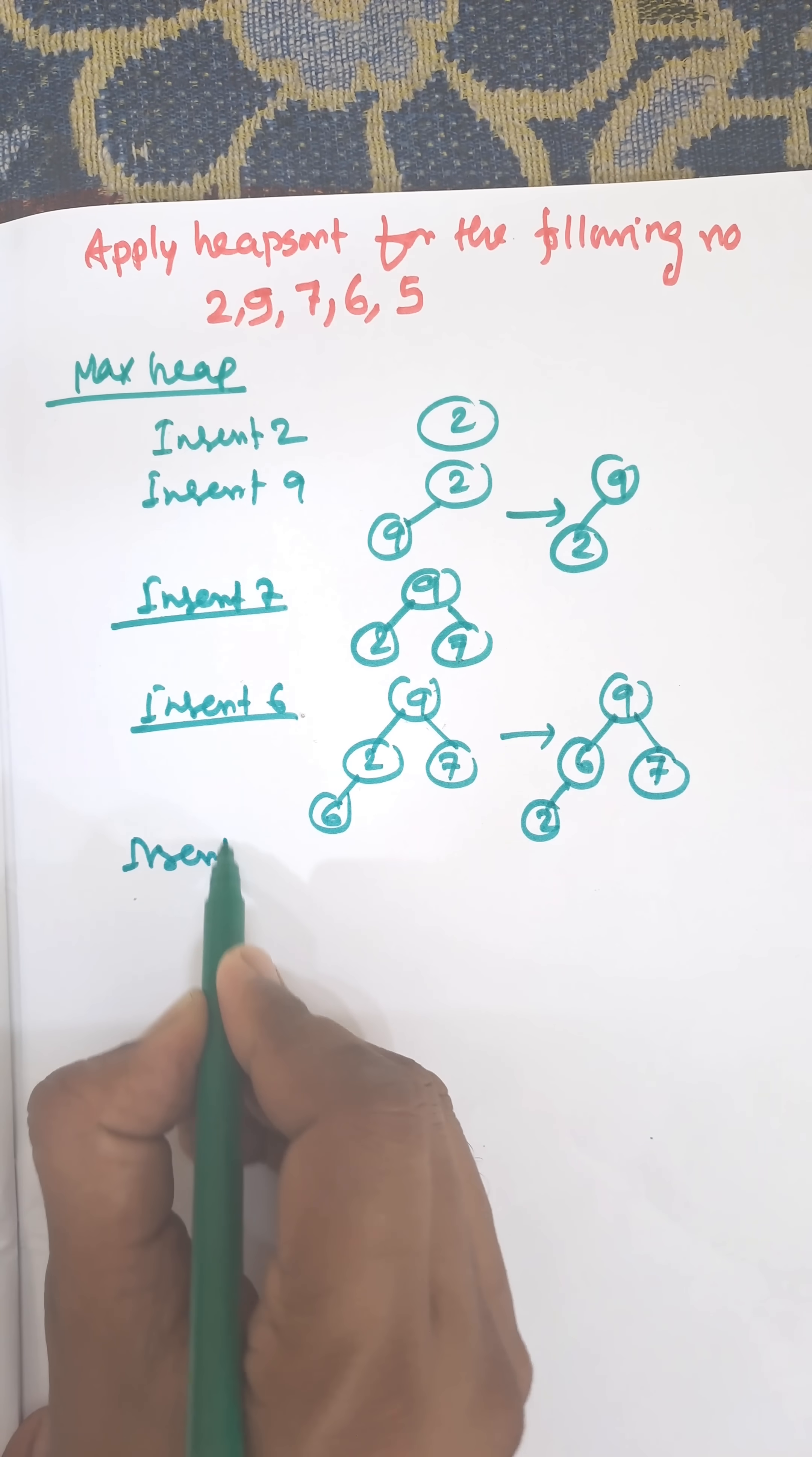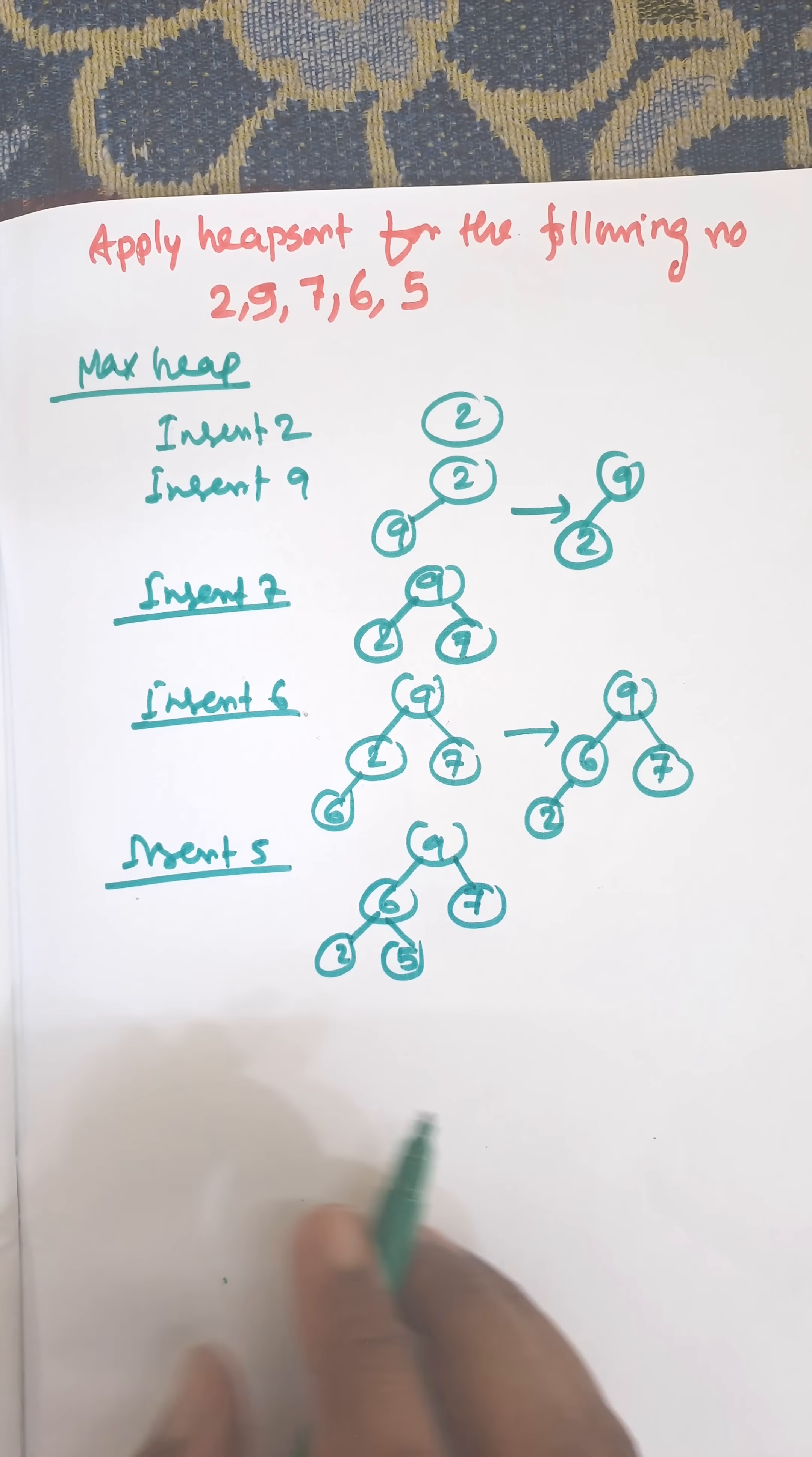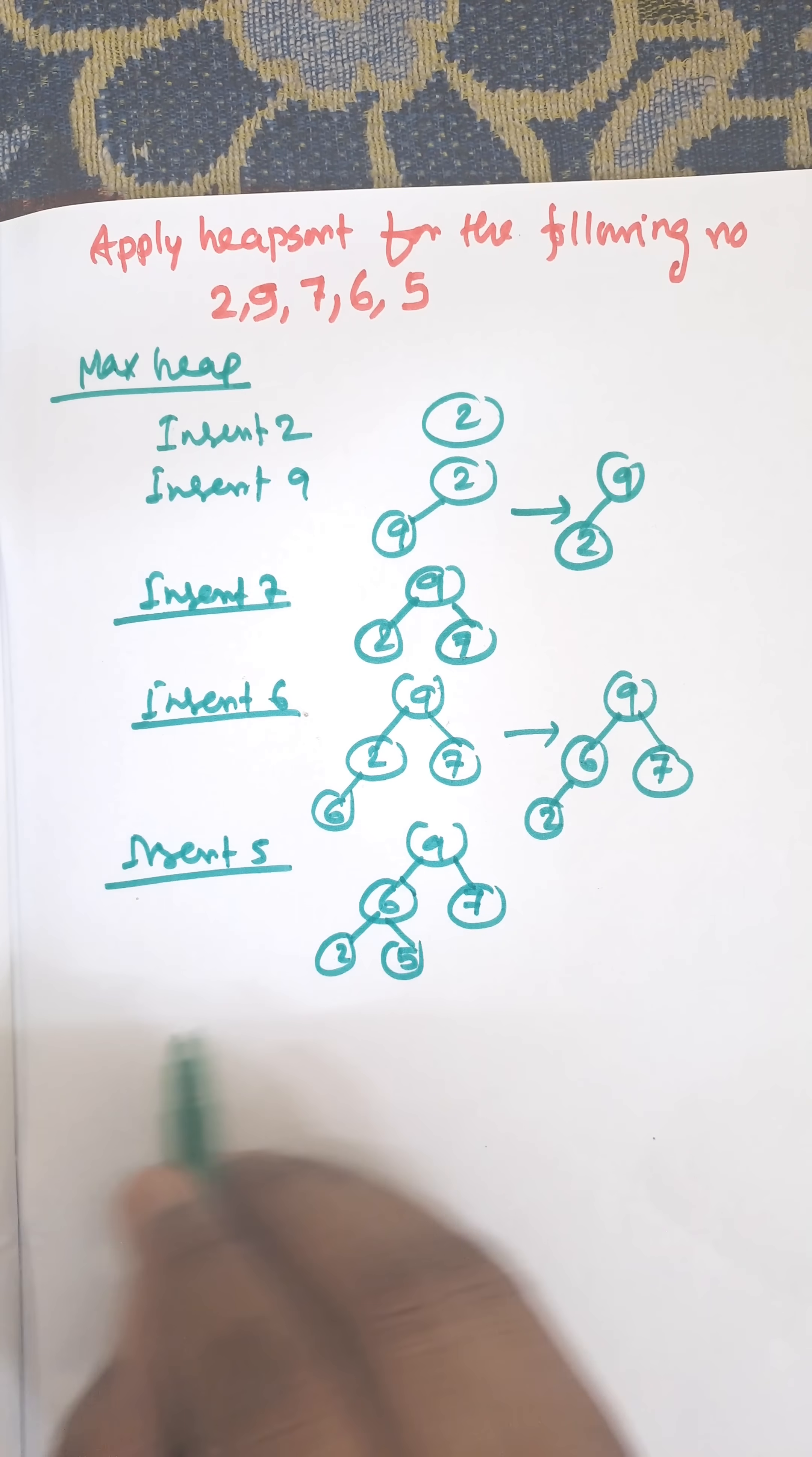Now insert 5. 9, 6, left child and right child. MaxHeap is nothing but a complete binary tree. This is an almost complete binary tree. Now 6 is greater than 2 and 5. 9 is greater than 6 and 7. So it is a MaxHeap.